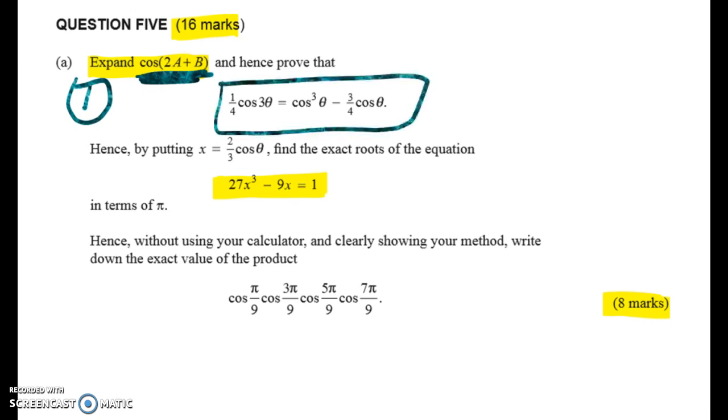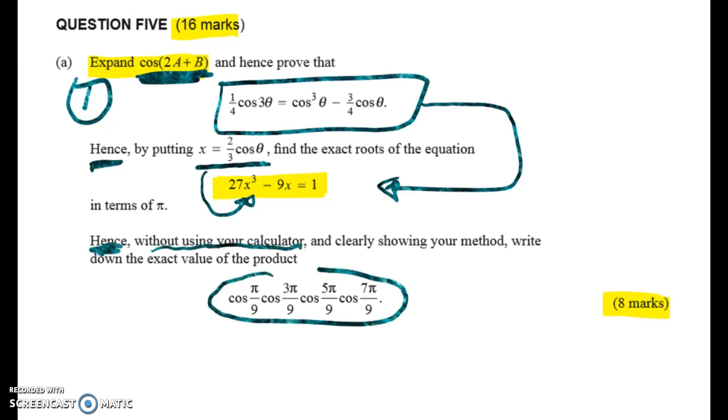Then we're going to make a substitution. We're going to put x equals two thirds of cos theta and we're going to chuck that into this equation and see what we get. And the big clue word here is hence. So somehow we're going to use this identity with this equation.